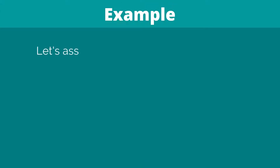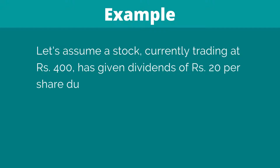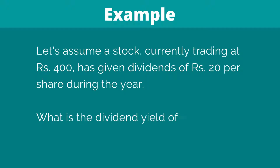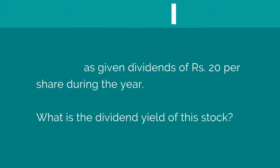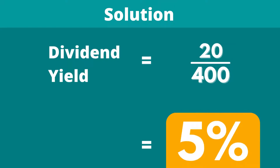Now let's understand with the help of an example. Let's assume a stock currently trading at 400 rupees has given dividends of 20 rupees per share during the year. What is the dividend yield of this stock? Dividend yield is simply annual dividends divided by stock price, which in this case is 20 divided by 400, which is equal to 5%. Hence, the dividend yield of this stock is 5%.